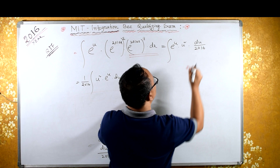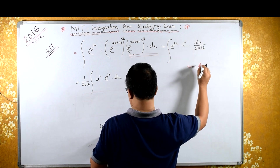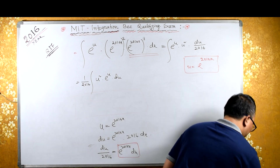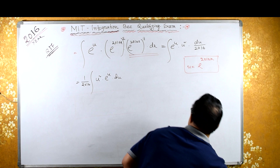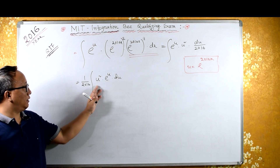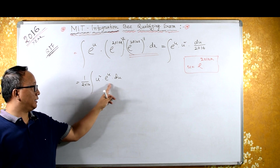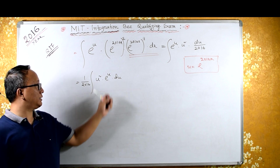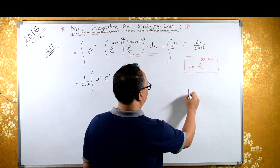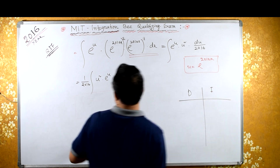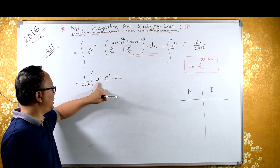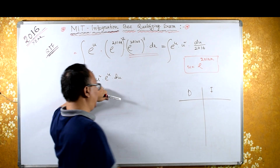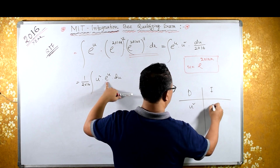Keep in mind that our substitution was u equals e raised to 2016x. Now here we have to use integration by parts — or you can use the DI method, that is the differentiation-integration method. I am choosing u squared as the first function and e raised to u as the second function, because differentiation of u squared eventually reaches 0, while integration of e raised to u keeps going.